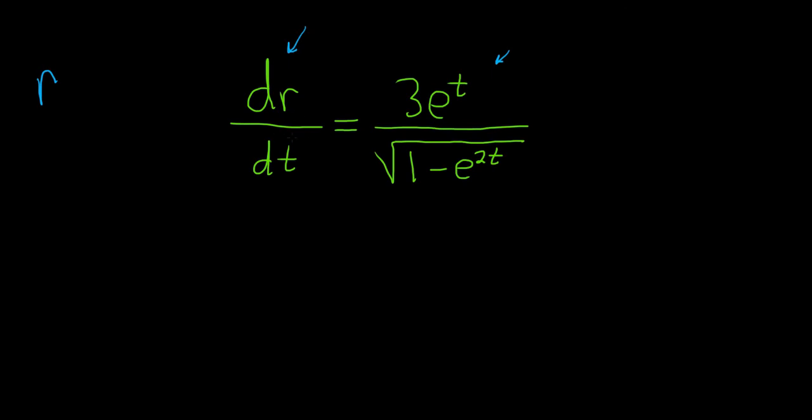So since we have the derivative of r, we can simply integrate both sides to get r. So if we integrate the left-hand side, we're just going to get r. And then we have to integrate the right-hand side, and that will give us the answer to the problem.